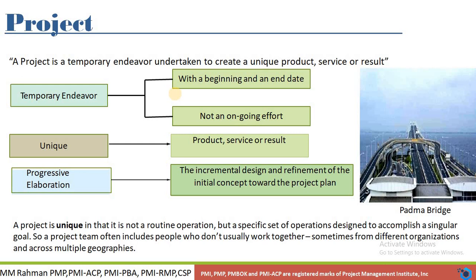The output of the project is always unique. Another characteristic of the project is progressive elaboration. Progressive elaboration means in the beginning of the project we do high-level planning, because in the initial stage the project scope is at a high level. As we move to the execution phase, the project team knows the detailed activities and we start detail planning.